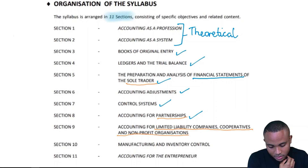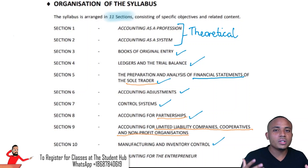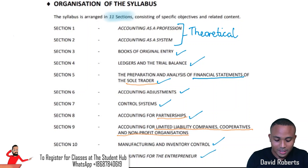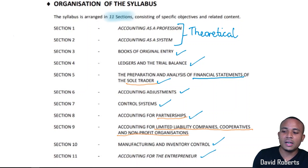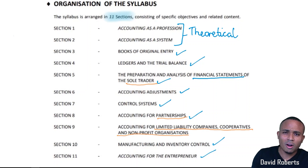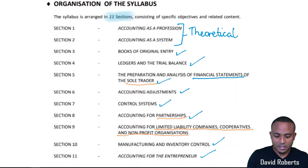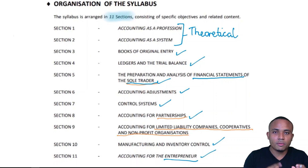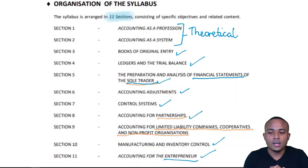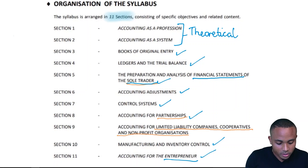In Section 10, there's manufacturing and inventory control — looking at how a manufacturing company keeps their records. And finally, how will an entrepreneur keep their records? By and large, the aim is that when you complete your studies for the POA exam, you will have a basic understanding of how accounting works in different facets and different types of businesses and business structures.